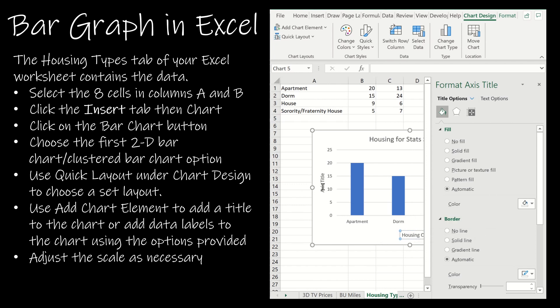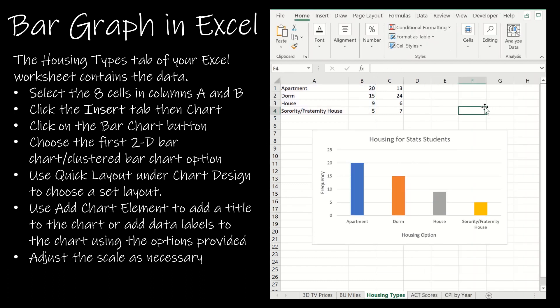If I click on one of these bars, I can click 'vary colors by point' so they don't all look the same. Now I have pretty much everything I need.